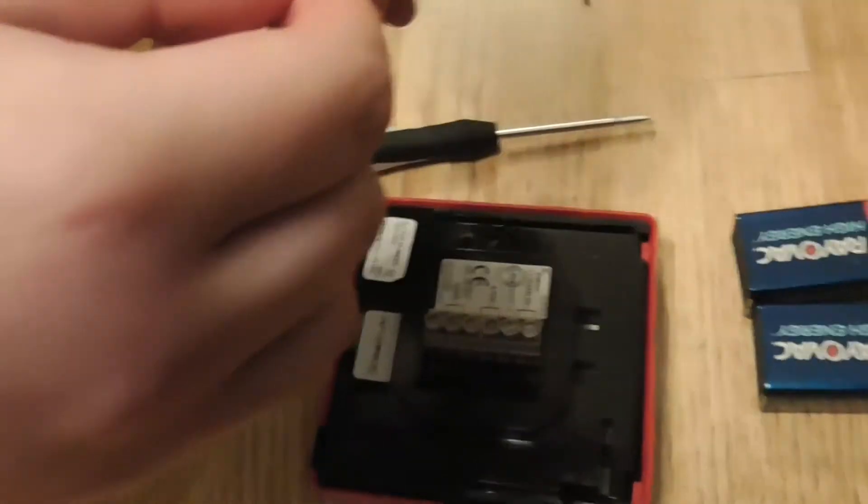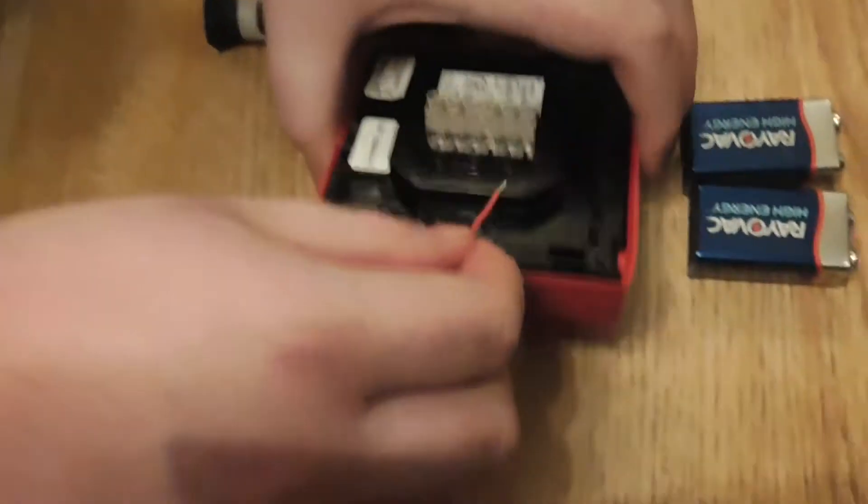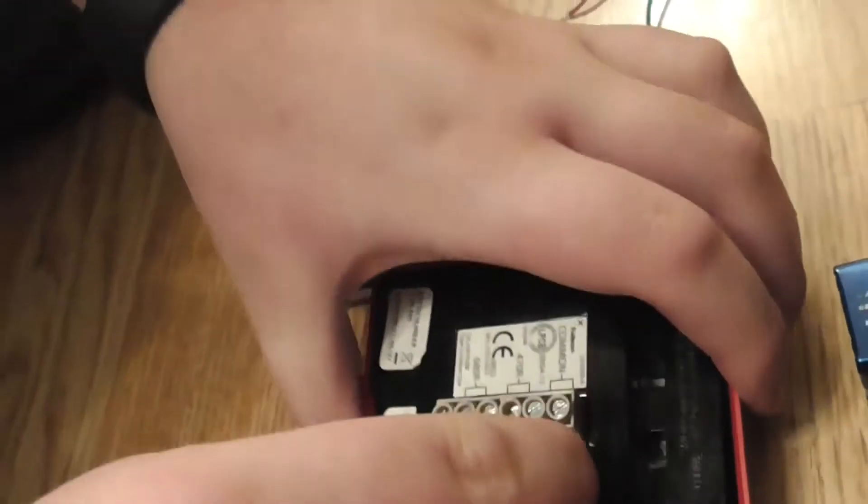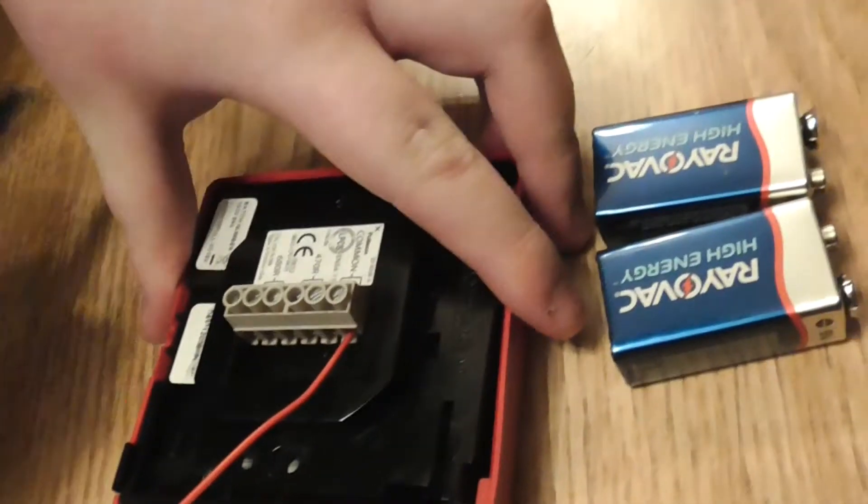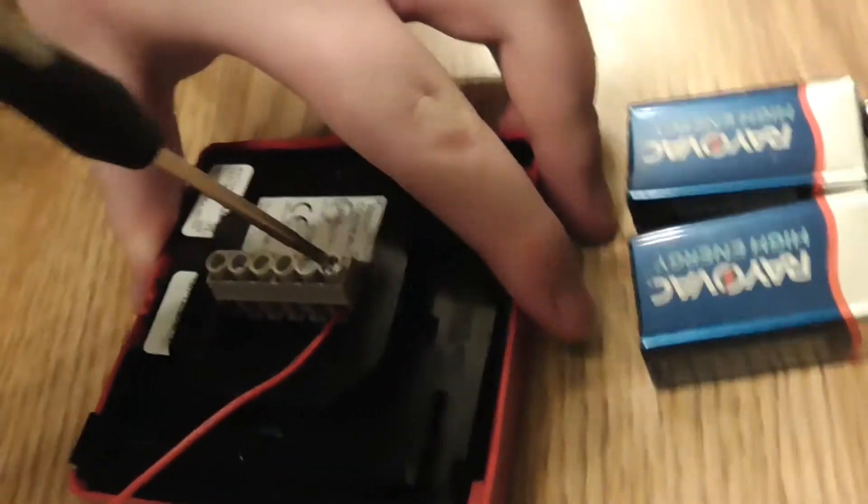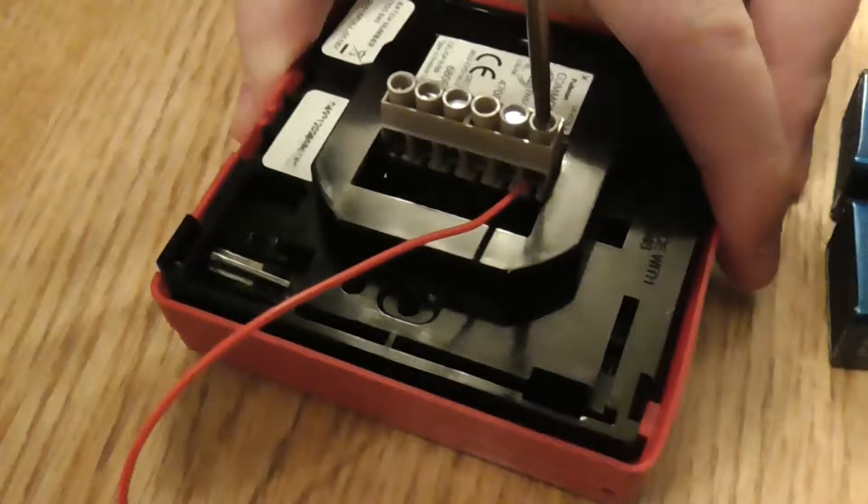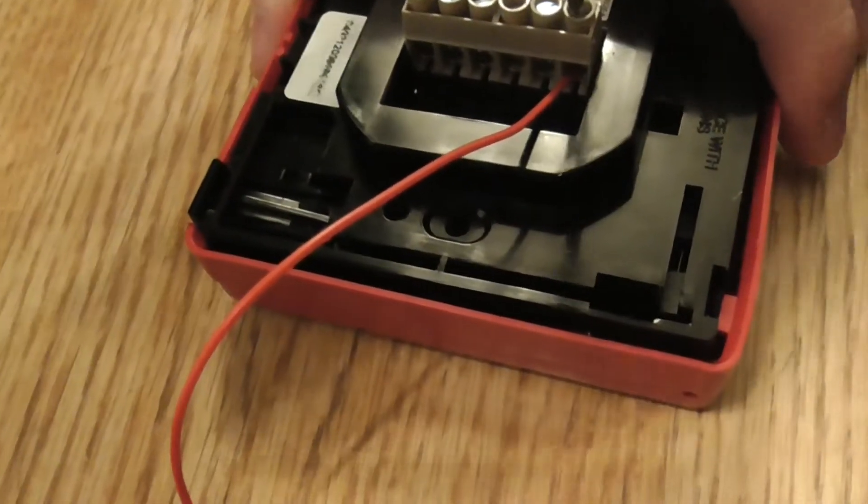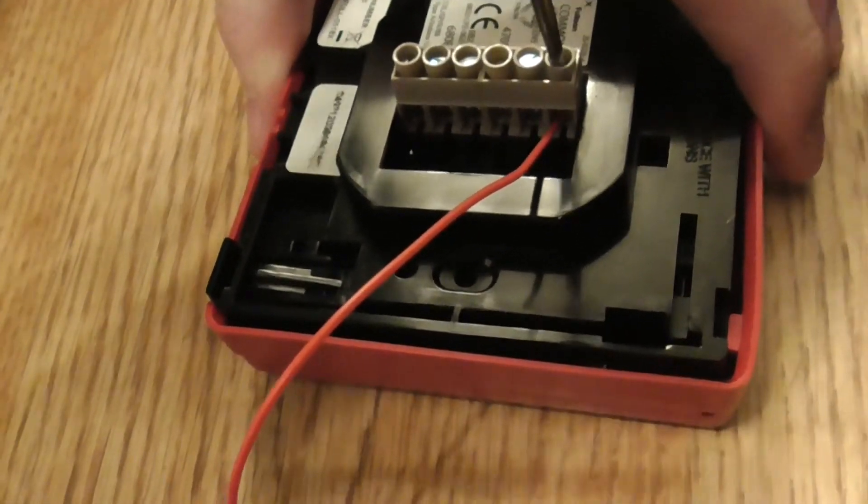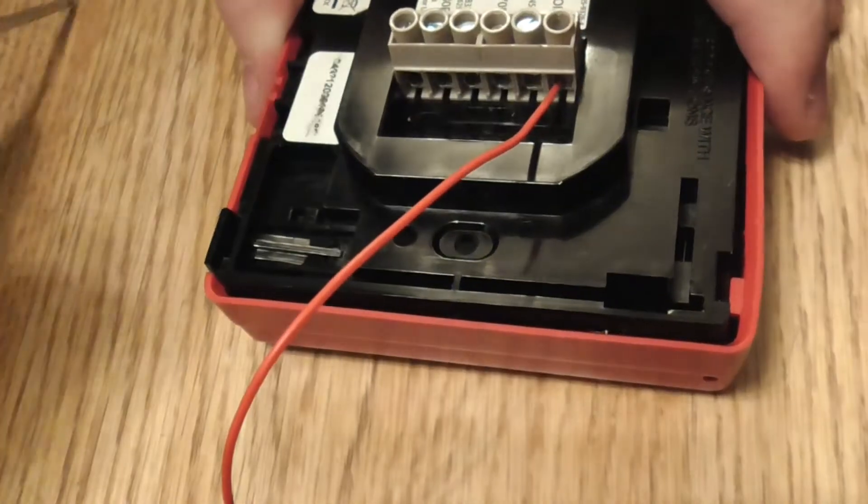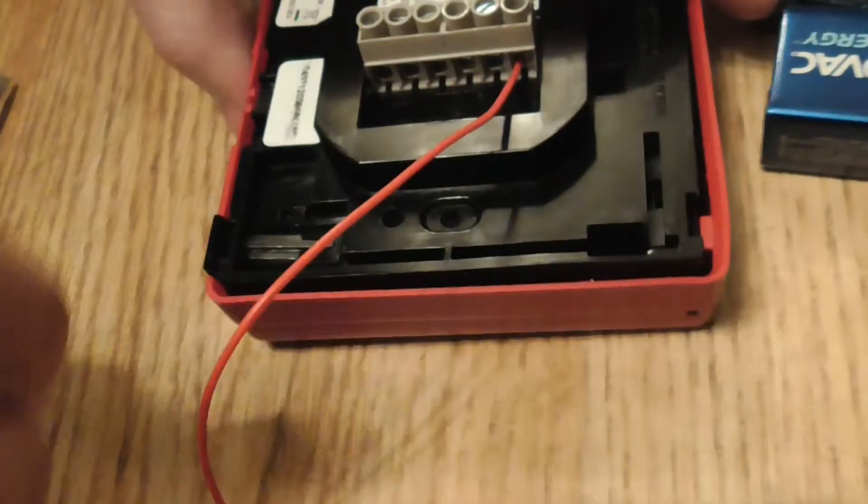So first thing we're going to wire the positive connection into the common. So the first one is common, so let's wire the common with my screwdriver here. Make sure it's in, it is a bit fiddly a little bit, get it down. There we go, that's in now.